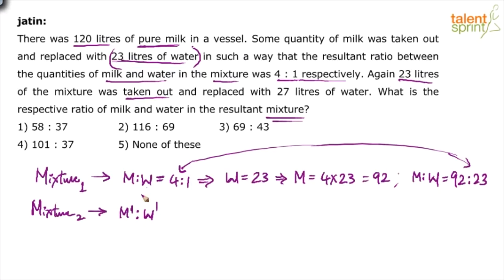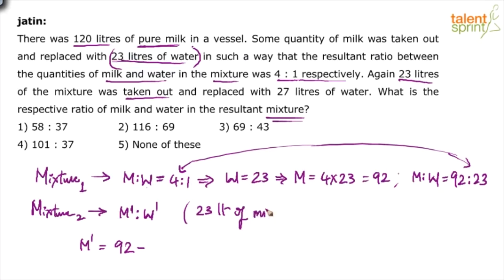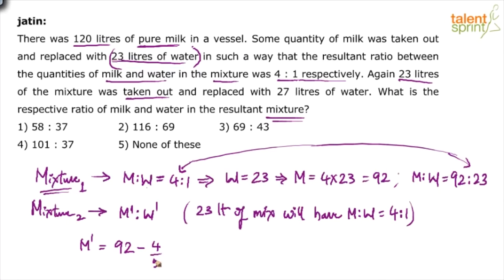Now, let us find out milk and water individually. So how much will M' be? Initial milk for Mixture 2 comes from Mixture 1, so M' = 92 liters of milk minus what was removed. 23 liters of mixture was removed, and since the mixture is in ratio 4 is to 1, whatever is removed will also be in ratio 4 is to 1. So how much milk comes out? 4 out of 5 parts — that is, 4/5 × 23. So M' = 92 − (4/5 × 23).